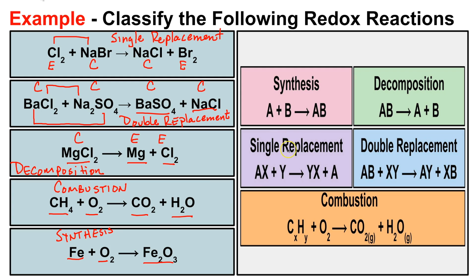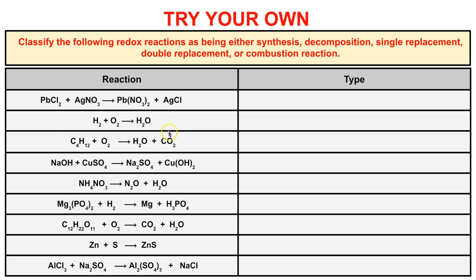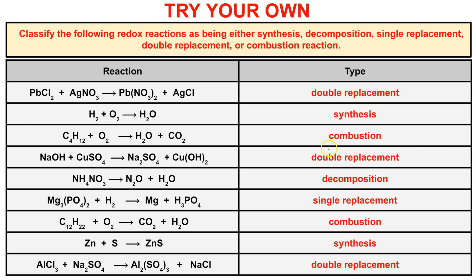That's how you spot and classify the different redox reactions. Go ahead and pause the video, take a few minutes to try these on your own — identify whether each reaction is synthesis, decomposition, single replacement, double replacement, or combustion. If you got them all correctly, you're well on your way to predicting the products of different types of redox reactions. If you like what you see, click the subscribe button in the bottom right corner, and feel free to leave any comments or questions below.